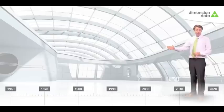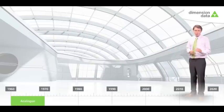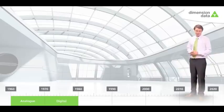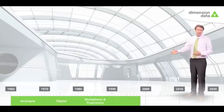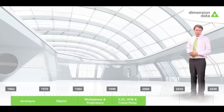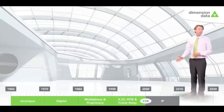Networks have been around 50 years. It all started with analogue, but a few years later that was stripped out and completely replaced by the next advancement, digital. As quickly as technology moves on, digital was then completely replaced by multiplexes and proprietary systems. In the 1990s, X-25 came along, which was followed by ATM and frame relay. The last big advancement was when everything moved to IP over 12 years ago, and there hasn't been a next big thing since.